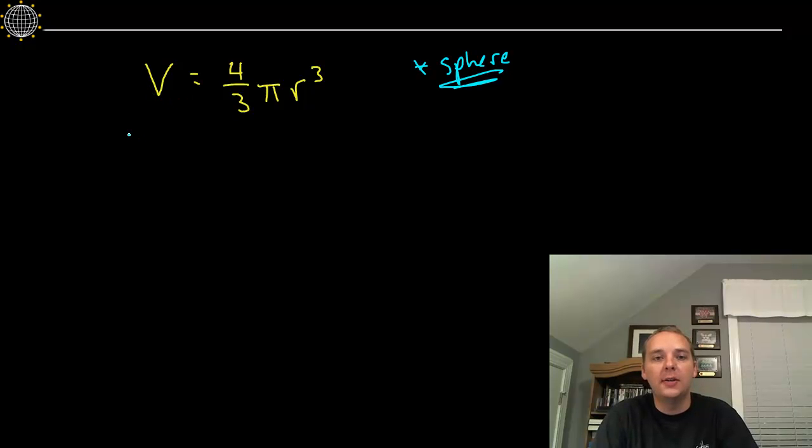Derivative of volume with respect to time, that would be dv dt, change in volume over change in time. Derivative of four thirds pi r cubed. The four thirds and pi are constants, and the three could come down and multiply because r is a variable, to the four thirds, and you get just four pi r squared, power rule.